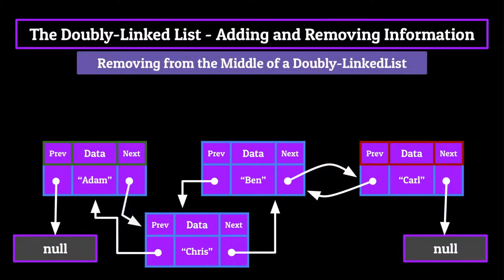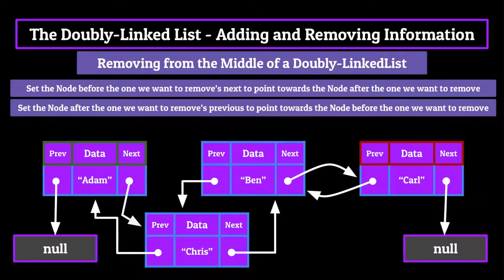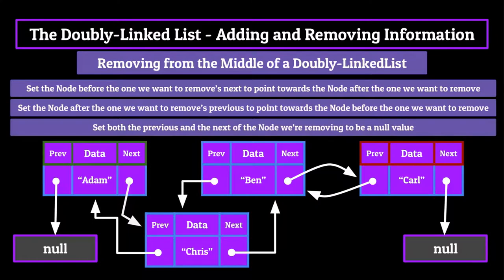Removing from the middle of the list is also a three-step process. First, we set the node before the one we want to remove's next to point towards the node after the one we want to remove. Then we set the node after the one we want to remove's previous to point towards the node before the one we want to remove. Finally, we set both the previous and the next of the node we're removing to point towards a null value.